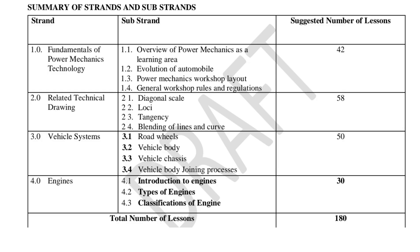The third strand is vehicle systems, covering road wheels, vehicle body, vehicle chassis, and vehicle body joining processes — in 50 lessons. The fourth strand is engines, with substrands on introduction to engines, types of engines, and classification of engines. Power mechanics will have a total of 180 lessons per academic year.